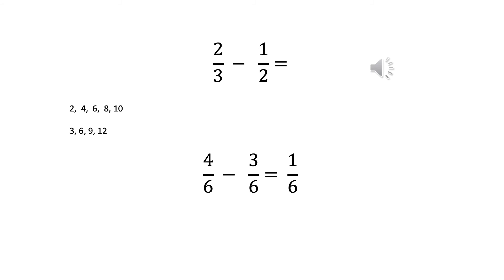And I've got the three sixths by thinking, what do I need to do to the two to give me six? I need to multiply it by three. So therefore, what do I need to do to the numerator, top number one? I need to also multiply that by three. So then I get four sixths, subtract three sixths. And that would leave me with one sixth.